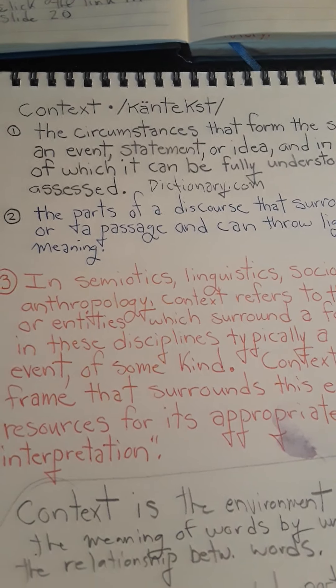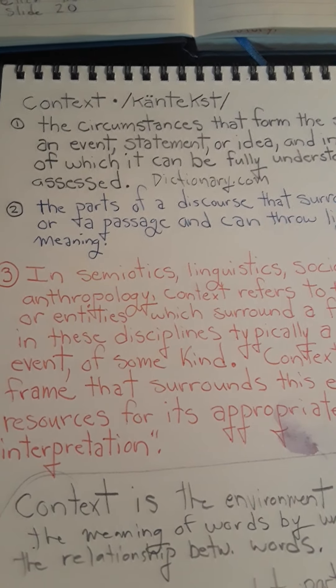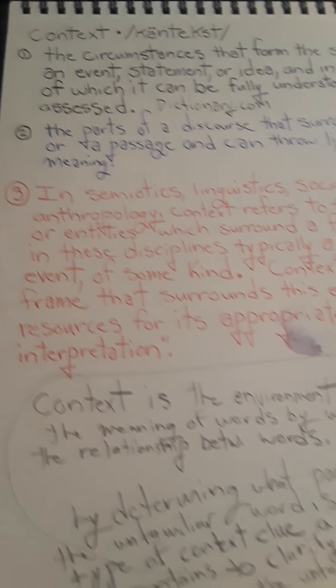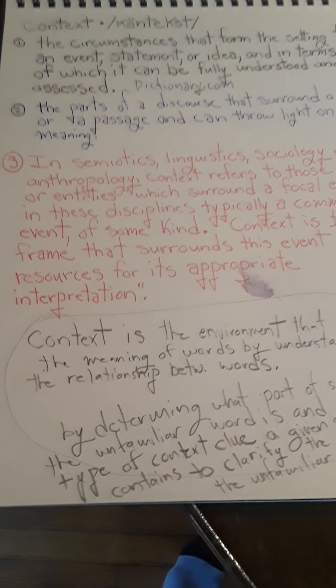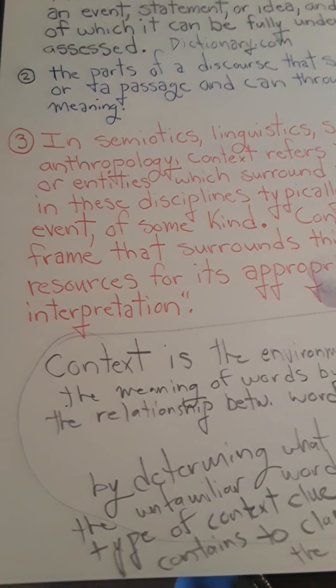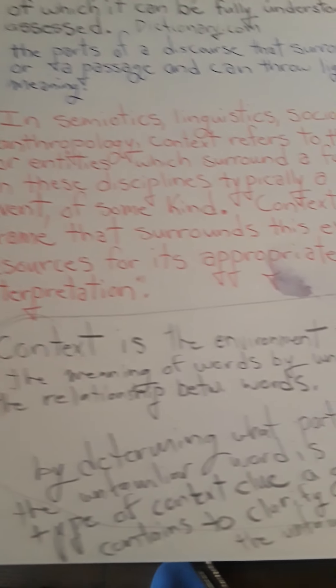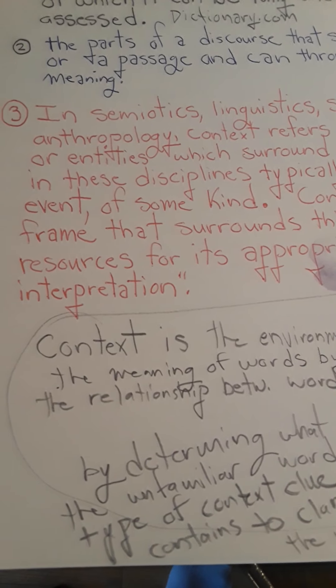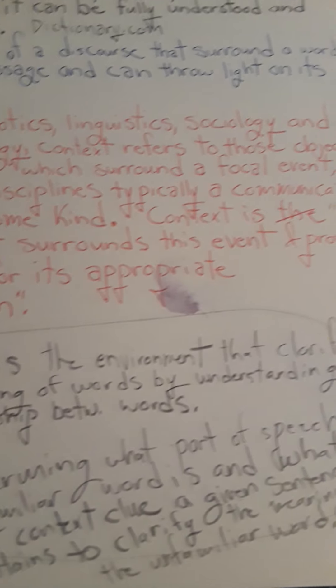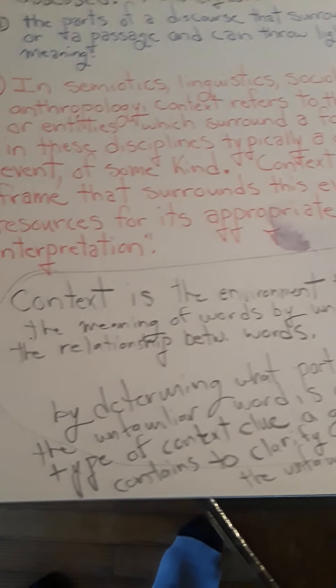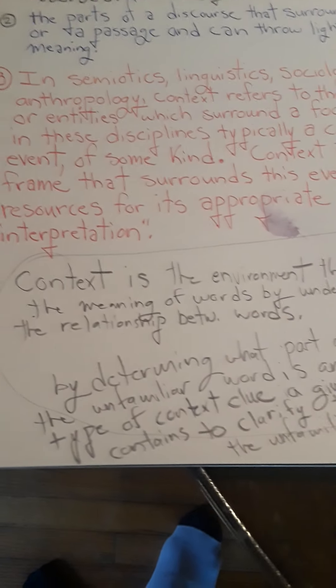Also on dictionary.com: the parts of a discourse that surround a word or a passage and can throw light on its meaning. This was also on the Internet — from semiotics, linguistics, sociology, and anthropology: context refers to those objects or entities which surround a focal event. Context is a frame that surrounds this event and provides resources for its appropriate interpretation.